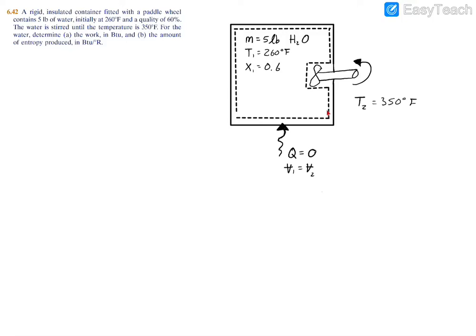In this problem we have a rigid, well-insulated tank containing five pounds of water initially at 260°F with a quality of 0.6, making it a two-phase mixture. A paddle wheel stirs the water, increasing its temperature to 350°F. We are asked to find the work in BTU and the amount of entropy produced in BTU per degree Rankine.